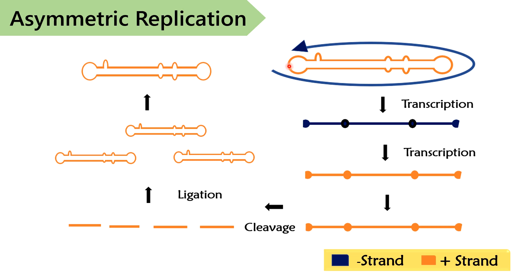In asymmetric replication, the circular plus strand will form the complementary minus strand. Then this minus strand will be used as a template to form a complementary plus strand. This plus strand will go through autocleavage and form a monomer. These monomer strands will get ligated and form circular RNA, or viroids.